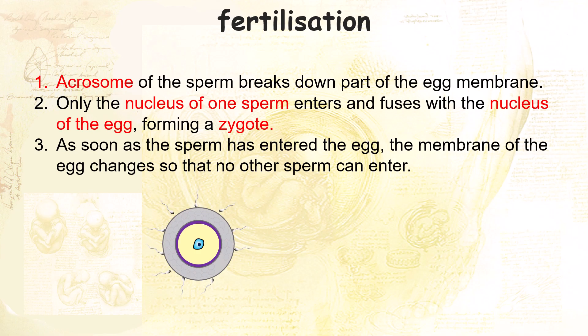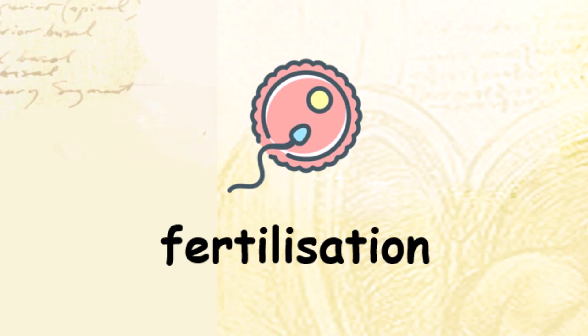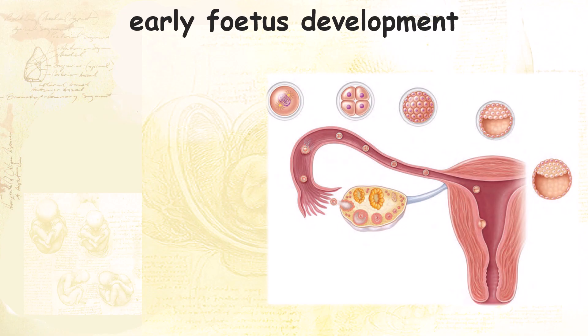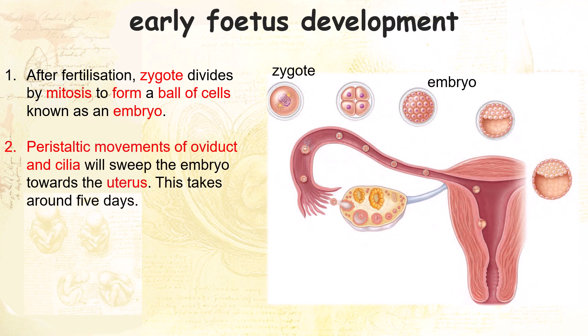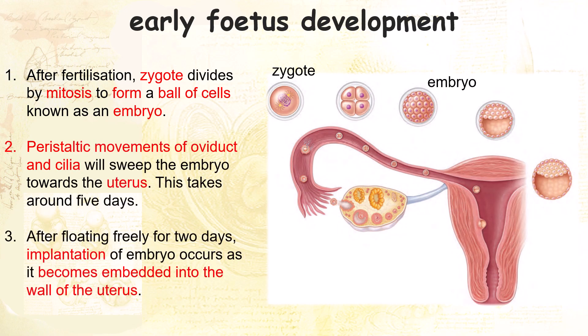Once a zygote is formed, it will enter the stage of early fetal development. After fertilization, the zygote will divide by mitosis to form a ball of cells known as an embryo. Peristaltic movements of the oviduct and cilia will sweep the embryo towards the uterus. Implantation of the embryo will occur after two days, as it becomes embedded into the wall of the uterus.